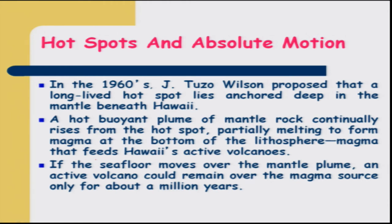On hot spots and absolute motion: the hot spot lies anchored deep in the mantle beneath Hawaii and is the source for volcanic eruptions and magma coming to the surface. A hot, buoyant plume of mantle rocks continuously rises from the hot spot, melting to form magma at the bottom of the lithosphere. If the sea floor moves over the mantle plume, an active volcano could remain over the magma source for about a million years, because the motion is quite slow.